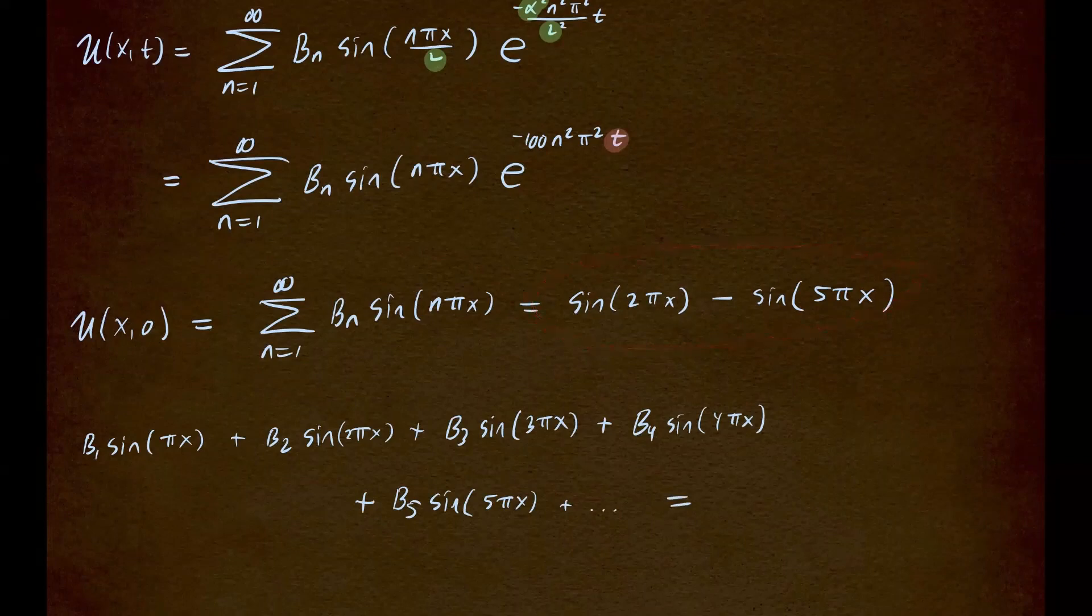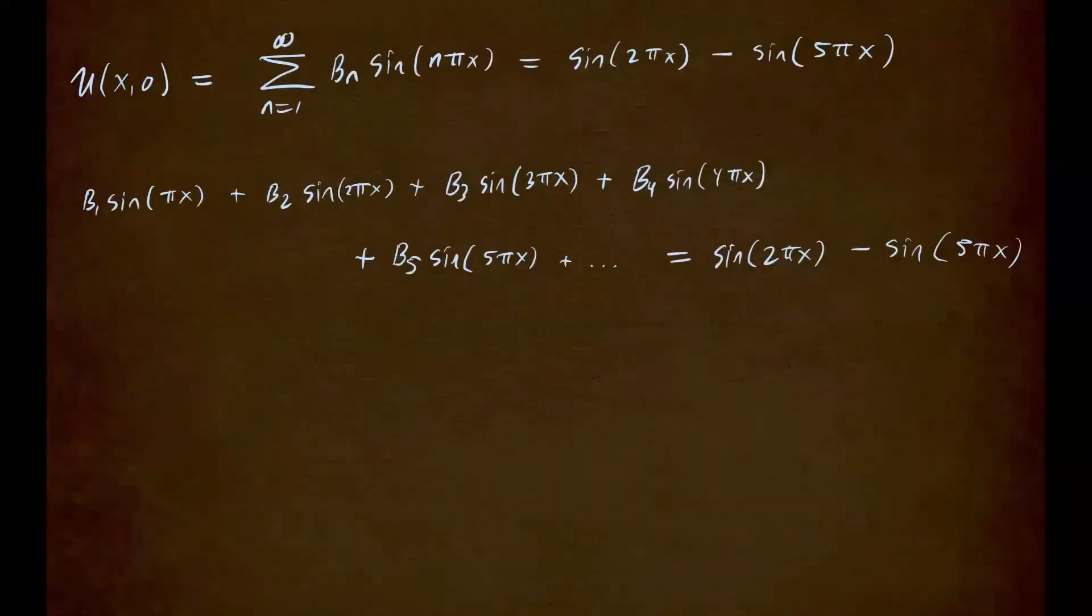is equal to the function which I have right here on the right-hand side. That's our f of x. So this is sine of 2 pi x minus sine of 5 pi x. All right, so now we're going to equate the coefficient to figure out these constants, bn.